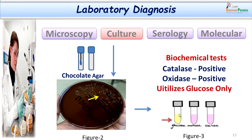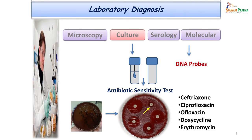Further biochemical testing of sugar utilization was performed. We found that this organism was able to utilize glucose only, oxidatively. One point to compare and contrast is with Neisseria meningitidis, a common causative agent of meningitis. In Neisseria meningitidis, it is able to ferment both glucose and maltose, whereas in Neisseria gonorrhoeae it is not able to ferment maltose — that is a differentiating point. However, both are oxidase positive. After carrying out these biochemical reactions, we were able to identify the organisms as Neisseria gonorrhoeae.